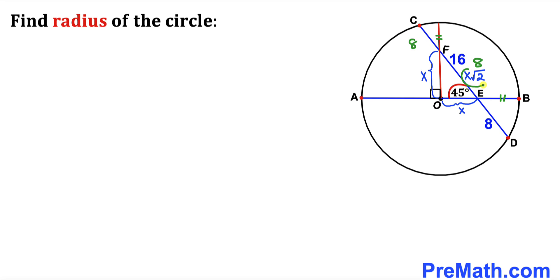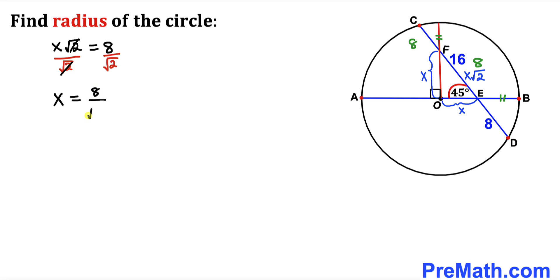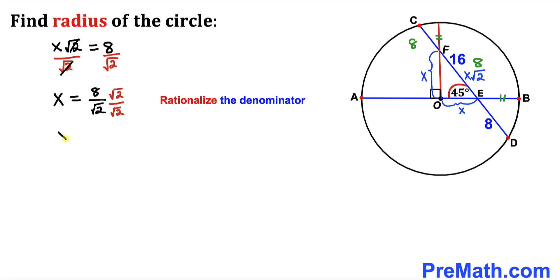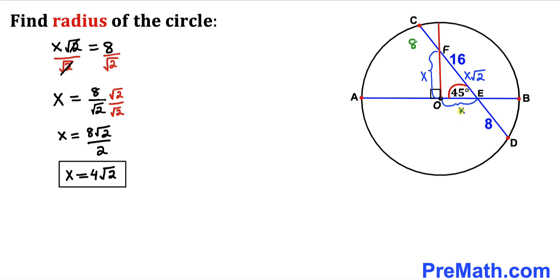So we can equate X times square root of 2 equals 8. Dividing both sides by square root of 2 gives X = 8 divided by square root of 2. Rationalizing the denominator by multiplying by √2/√2, the denominator becomes √4 = 2, giving us X = 8√2 divided by 2, so X = 4√2.